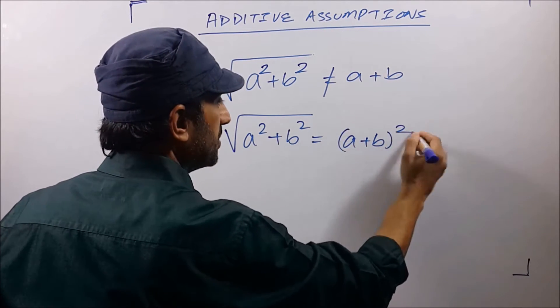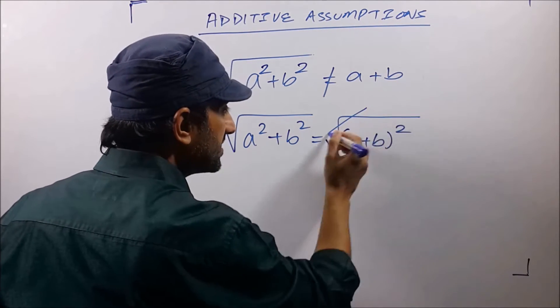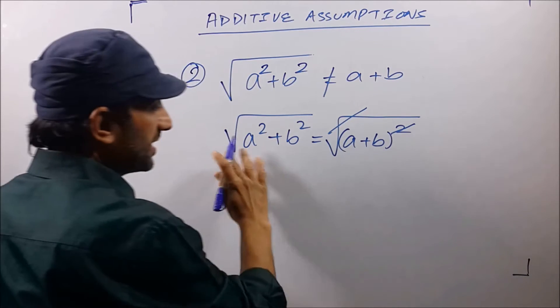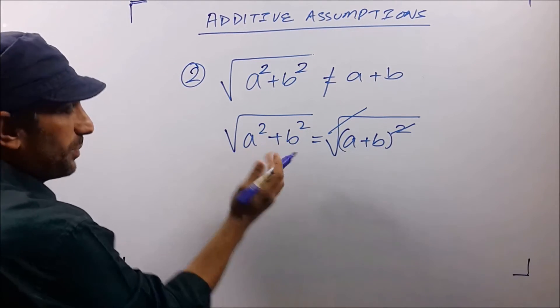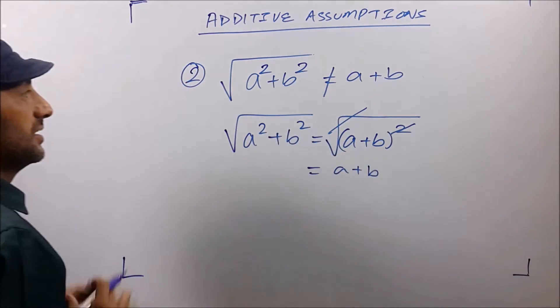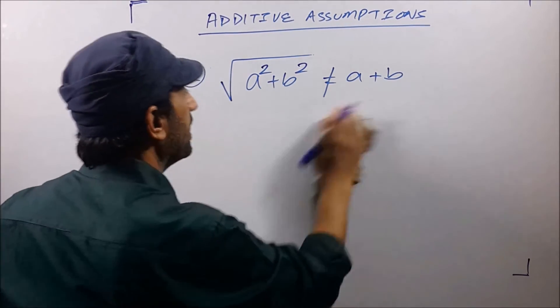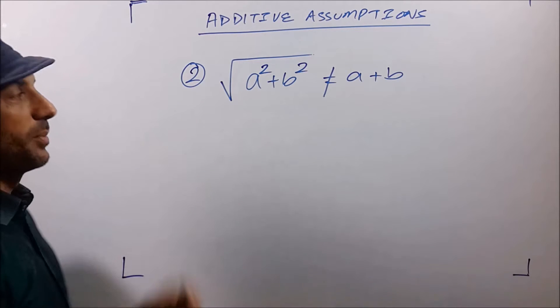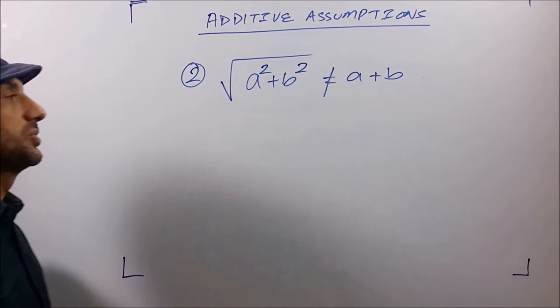is (a+b)² and they cancel that with square root and they assume that √(a²+b²) = a+b but it is not. So square root of a²+b² is not equal to a+b.